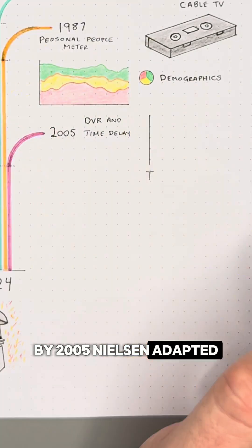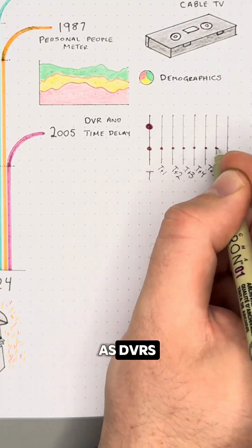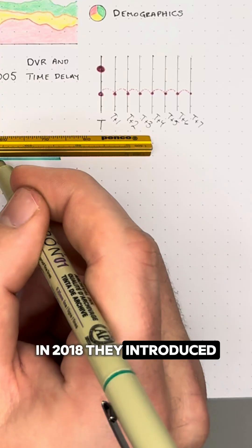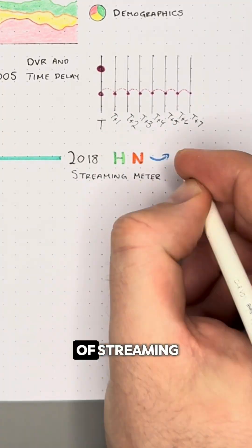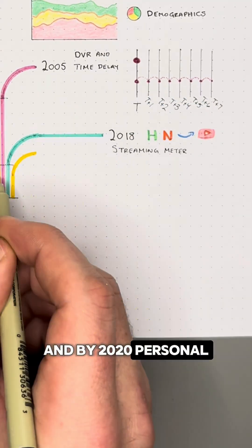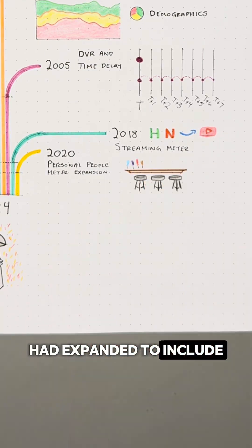By 2005, Nielsen adapted to time-shifted viewing as DVRs like TiVo gained popularity. In 2018, they introduced the streaming meter to track the rise of streaming, and by 2020, personal PeopleMeters had expanded to include out-of-home viewership.